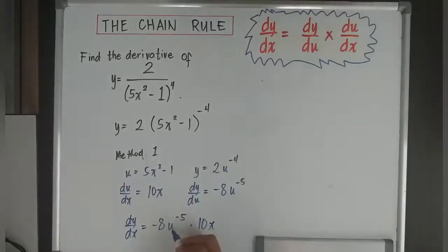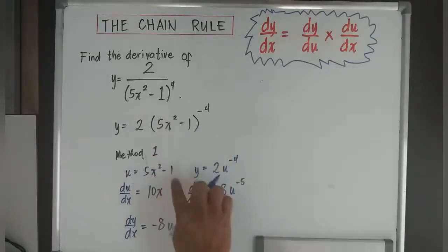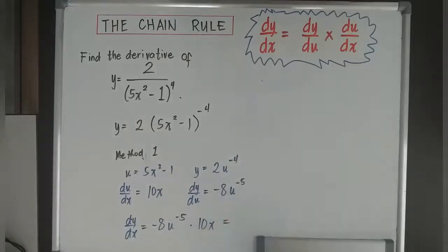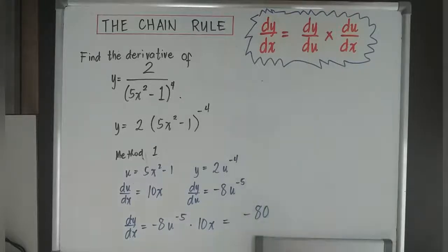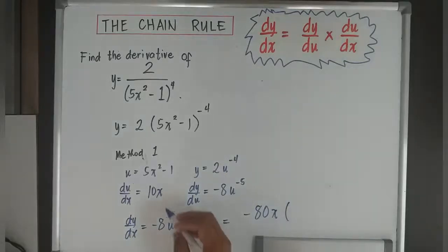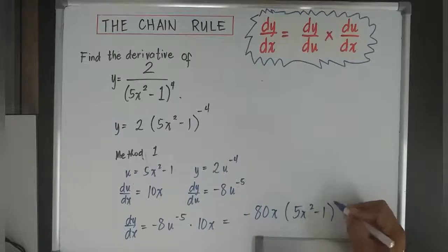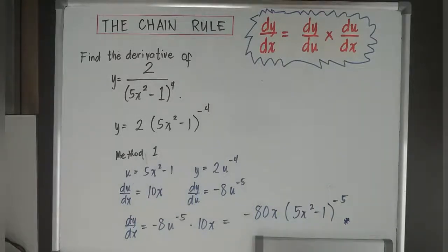Then I'll change u back to its original value, 5x squared minus 1. So the result is negative 8 times the quantity of 5x squared minus 1 to the power of negative 5, times 10x. This will be your answer for Method 1.